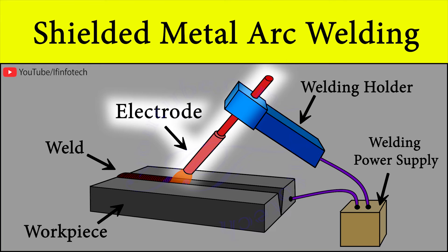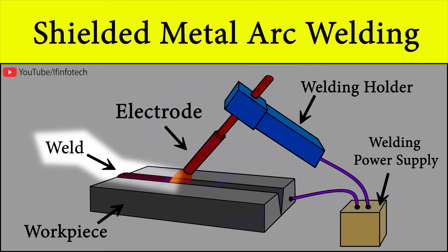The choice of electrode depends on a number of factors including weld material, welding position, and desired weld properties. The electrode is coated in a metal mixture called flux, which gives off gases as it decomposes to prevent weld contamination. It introduces deoxidizers to purify the weld, causes weld-protecting slag to form, improves arc stability, and provides alloying elements to improve weld quality.